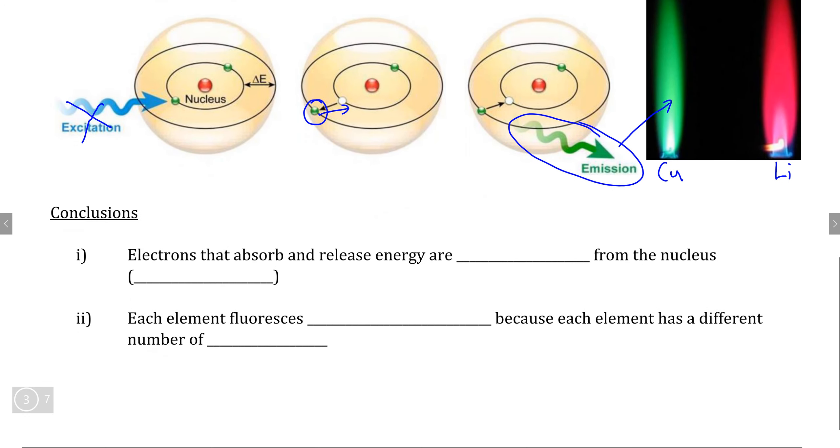So the conclusion that Niels Bohr realized through this fluorescence experiment is that the electrons that absorb and release energy are farthest from the nucleus, which just makes sense because the energy that is hitting the atom is going to hit the valence electrons first, and therefore the valence electrons are the ones that are going to jump to the excited state.